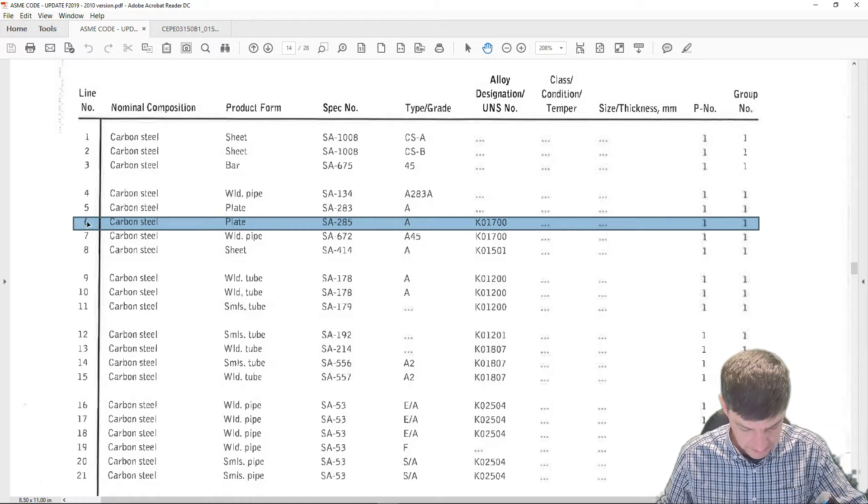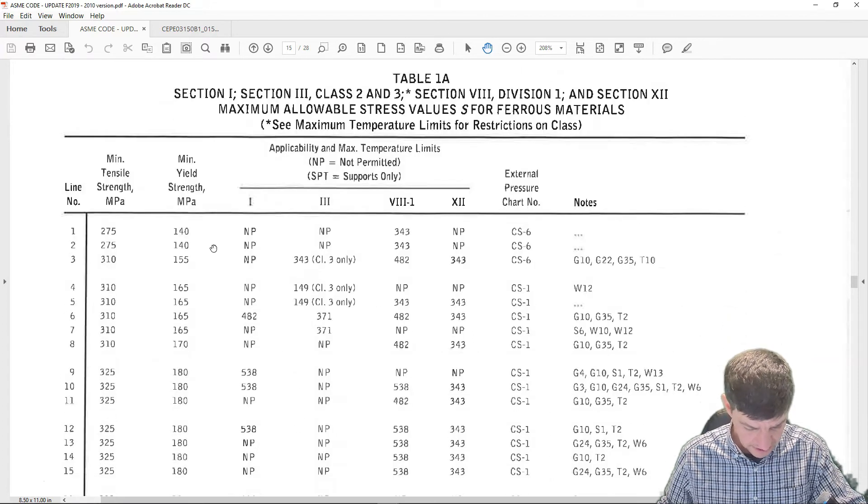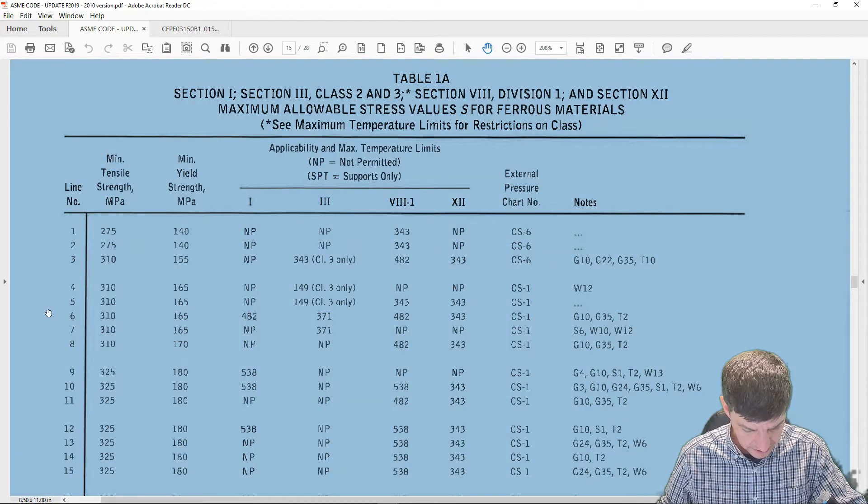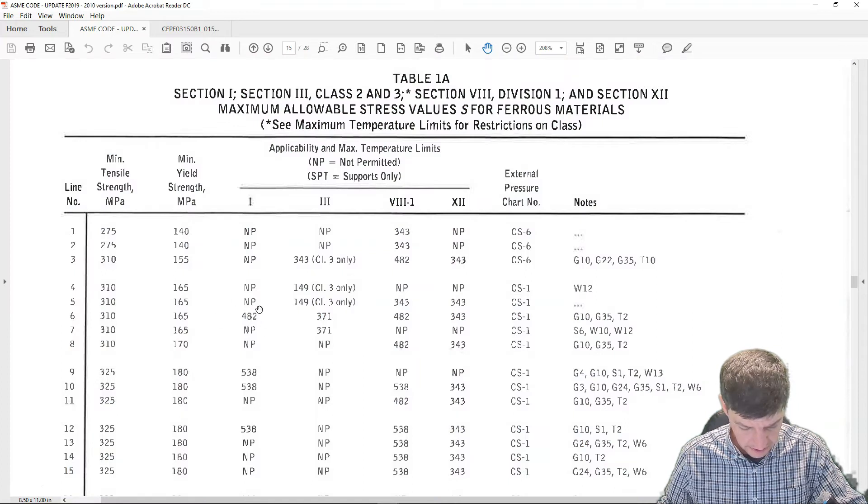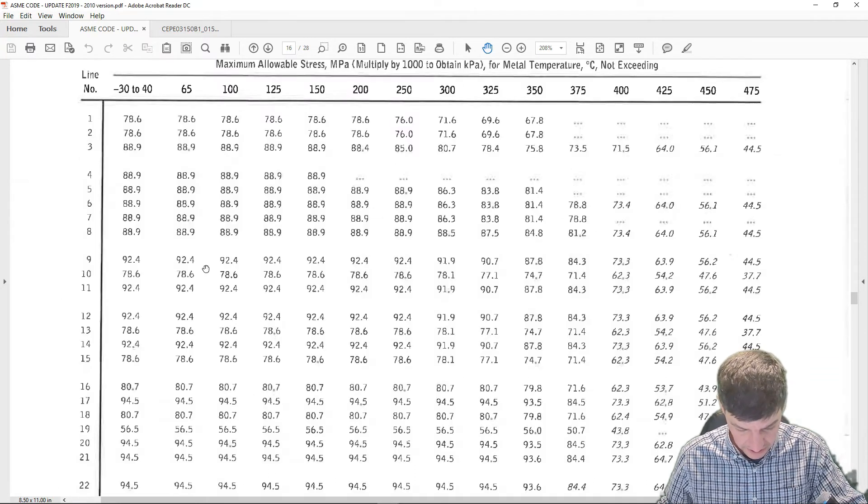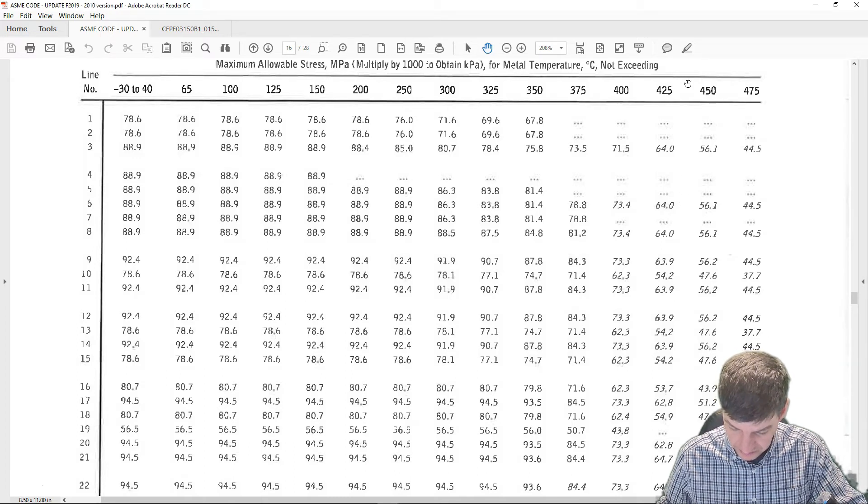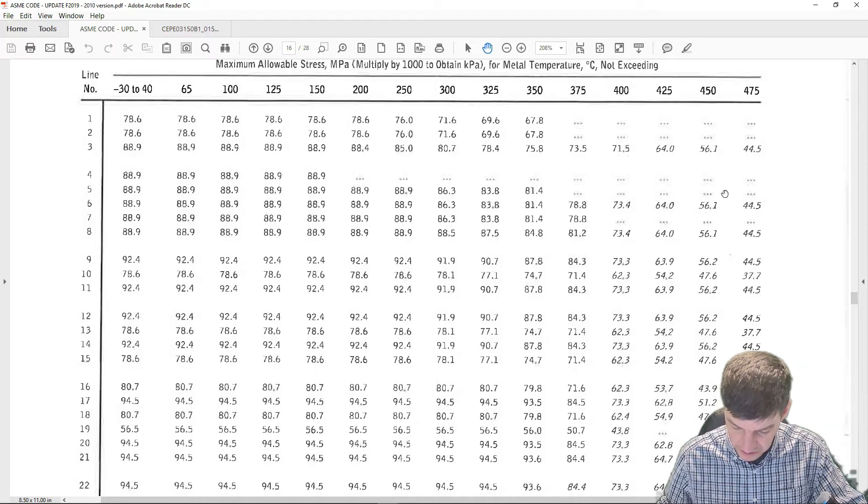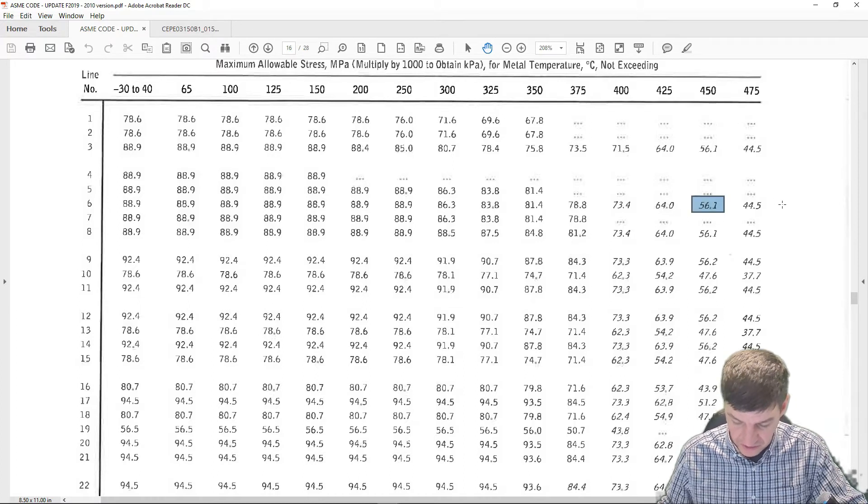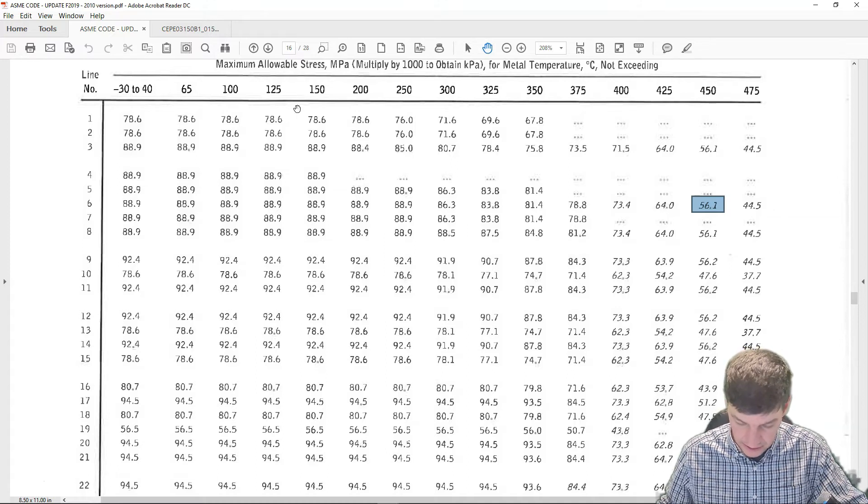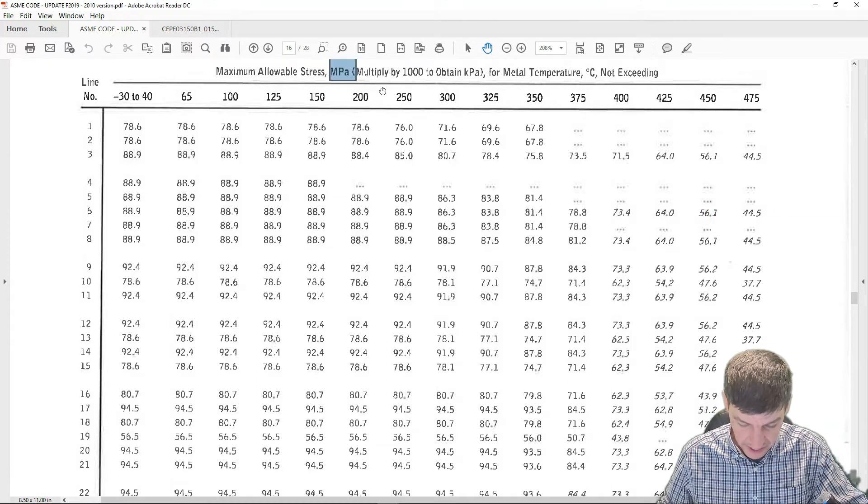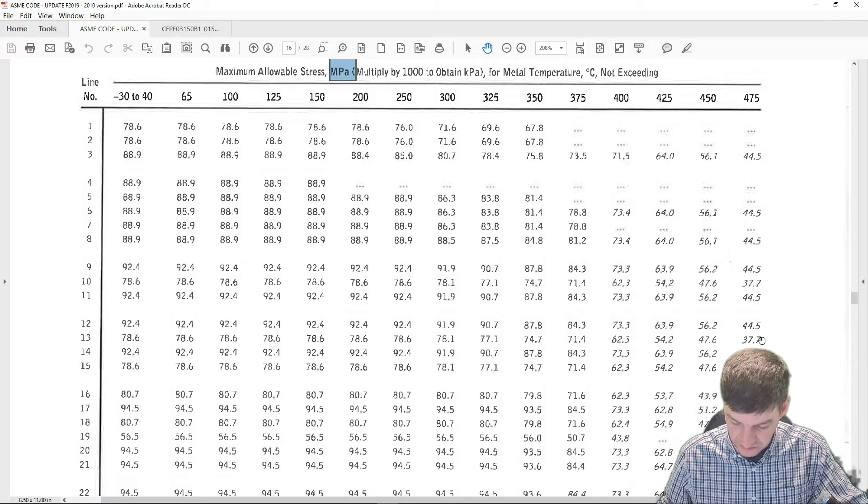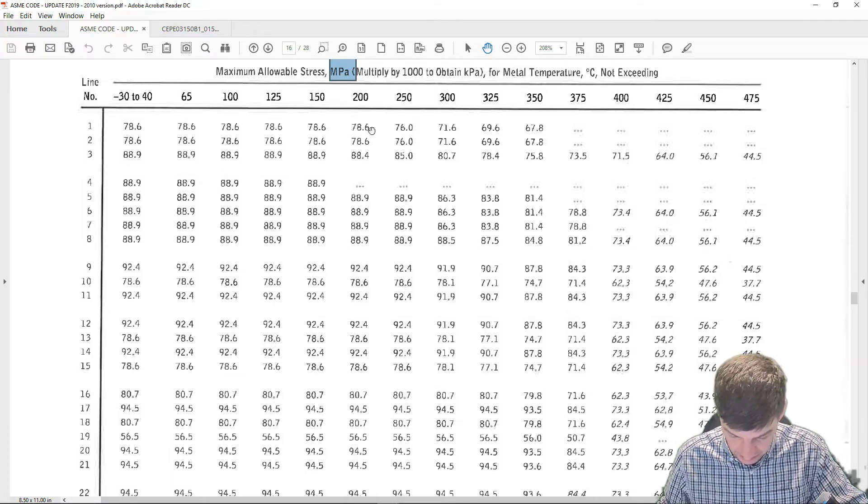And here we go. So it looks like I have my 285A, it is a plate, so that's good. So we're going to remember line six, scroll down to my next grouping, and I see that line six is allowable for section one up to 482 degrees, so that's good. And if I keep going down to line six at 439, of course we don't have 439, so I'm going to round up to the next largest temperature and I would have a stress of 56.1. And just double check that is in megapascals, so 56.1 megapascals.